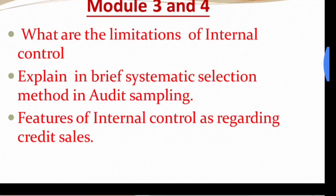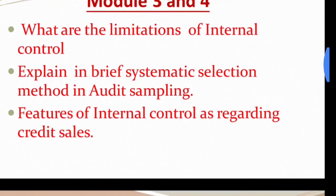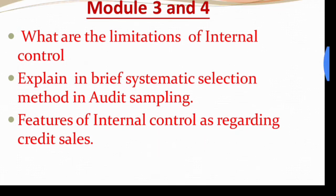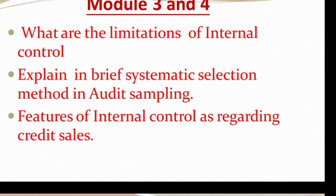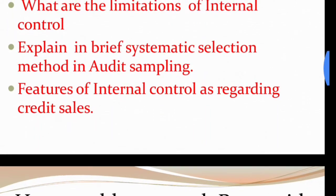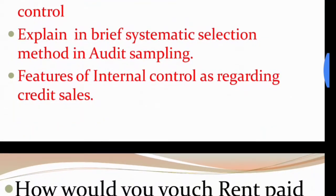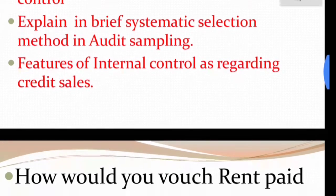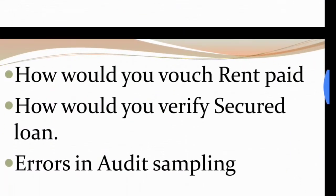Question number one that is important for you: what are the limitations of internal control? We have to write the limitations of internal control. Next question: explain in brief the systematic selection method in audit sampling. The third question is: what are the features of internal control as regarding credit sales? Different points can come here, but the features of internal control will remain the same.